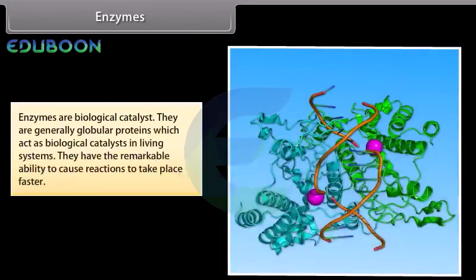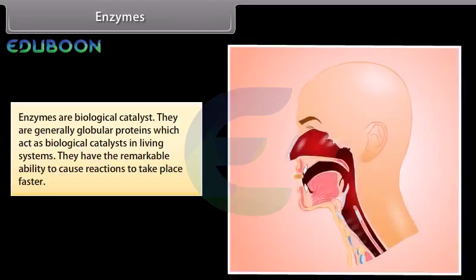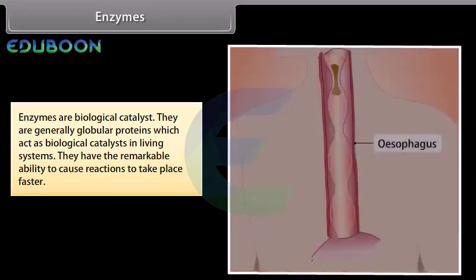Enzymes are biological catalysts. They are generally globular proteins which act as biological catalysts in living systems. They have the remarkable ability to cause reactions to take place faster. For example, if enzymes were not present in our digestive tract, it would take about 50 years to digest a single meal.